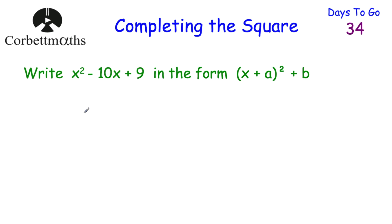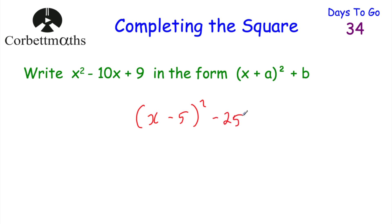Now here's one for you to try: write x² − 10x + 9 in the form (x + a)² + b. We open brackets and put x. The coefficient of x is minus 10, and half of minus 10 is minus 5, so we write (x − 5)². We take away minus 5 squared, which is 25, so minus 25. Then plus 9. Simplifying: (x − 5)² minus 25 plus 9 gives minus 16. So the answer is (x − 5)² − 16.